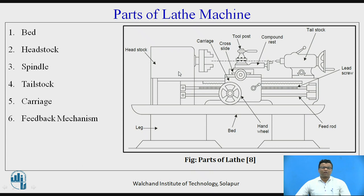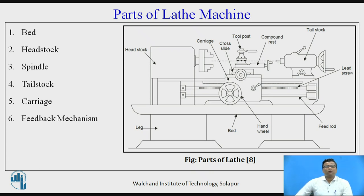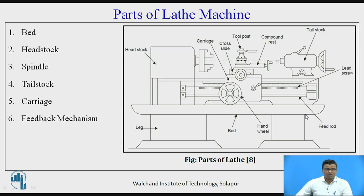What are the different main parts of the lathe machine, also called the main components? You can see this diagram. This is the bed, which is the base of the lathe machine. It should be sturdy with high strength and is manufactured by cast iron. Mainly, the headstock is also visible here.